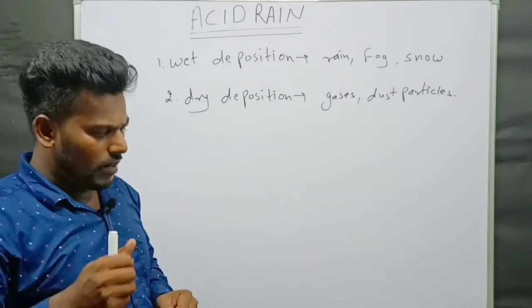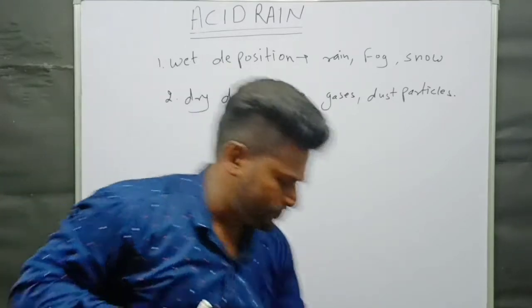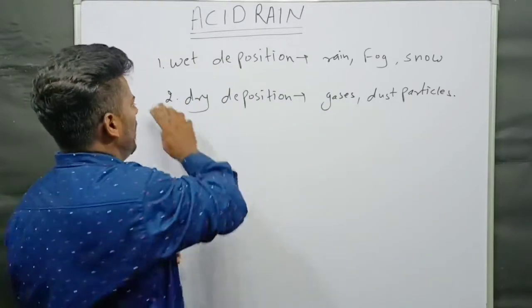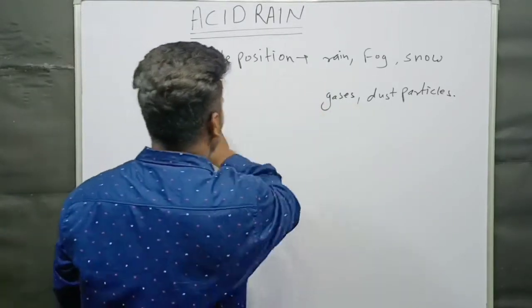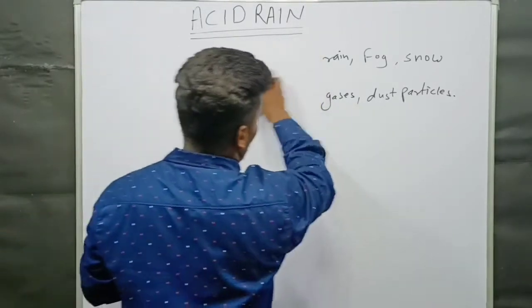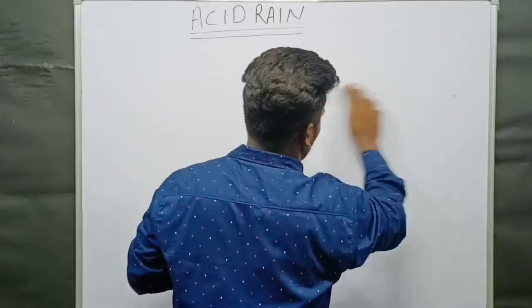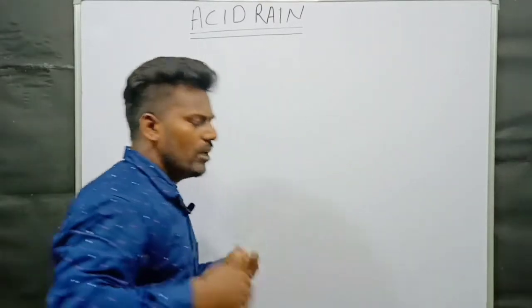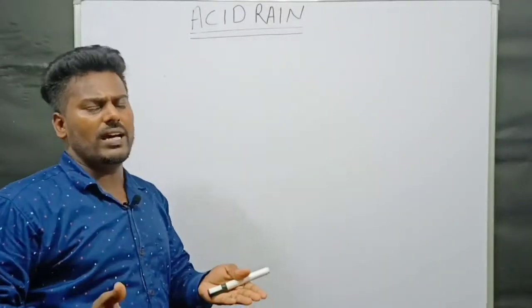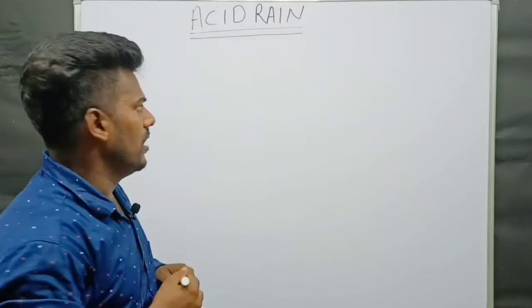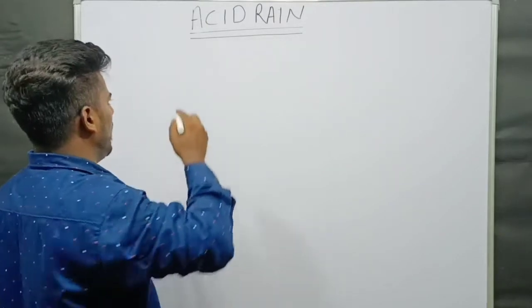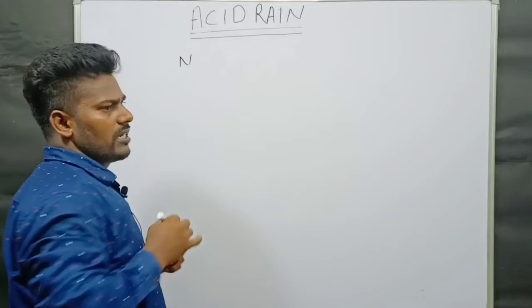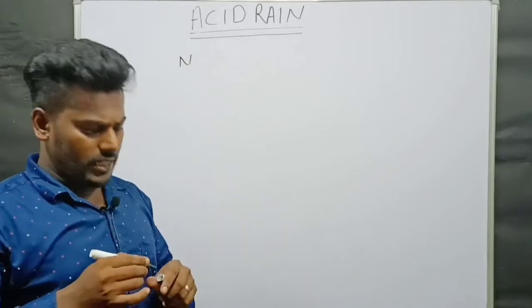Now, acid rain has many different contributing substances. The first thing we have is nitrogen.